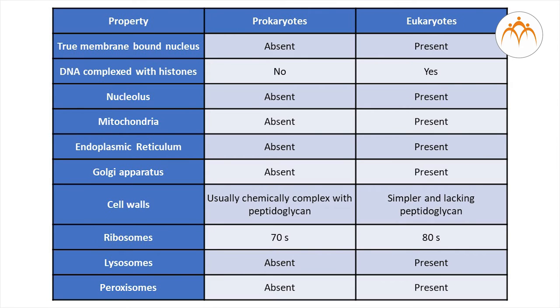Cell walls are usually chemically complex with peptidoglycan in prokaryotes, but in eukaryotic cells, cell walls are simpler and lacking peptidoglycan. 70S ribosomes are present in prokaryotes. 80S ribosomes are present in eukaryotes. Lysosomes are absent in prokaryotes, present in eukaryotes. Peroxisomes are absent in prokaryotes, present in eukaryotes.